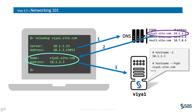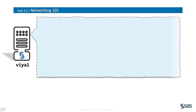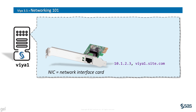If you log on to the Viya1 host yourself and query it for its IP address and its fully qualified domain name, or FQDN, then you should see the same values. As a general convention, the FQDN returned from the hostname utility is typically considered the default hostname for a machine, and we confirm that here.